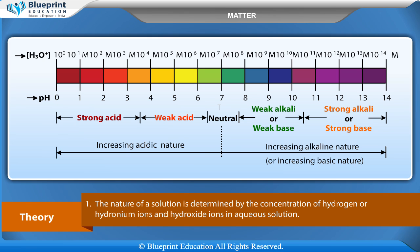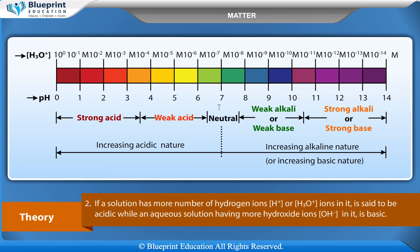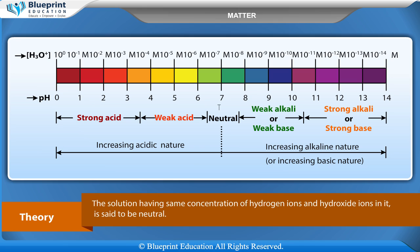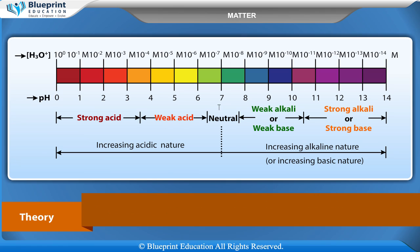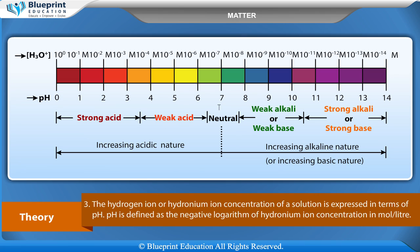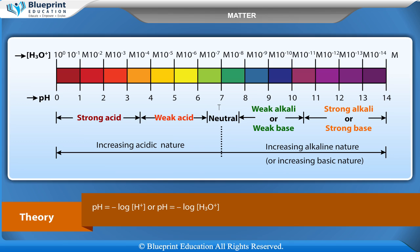If a solution has more number of hydrogen ions (H⁺ or H₃O⁺) in it, it is said to be acidic. An aqueous solution having more hydroxide ions (OH⁻) in it is basic. A solution having the same concentration of hydrogen ions and hydroxide ions is said to be neutral. The hydrogen ion or hydronium ion concentration of a solution is expressed in terms of pH. pH is defined as the negative logarithm of hydronium ion concentration in mole per liter: pH = −log[H⁺] or pH = −log[H₃O⁺].